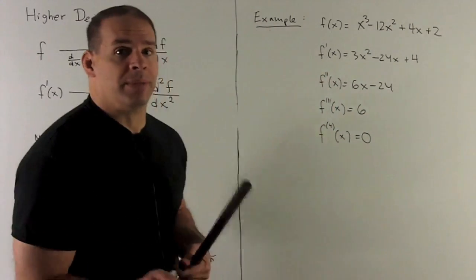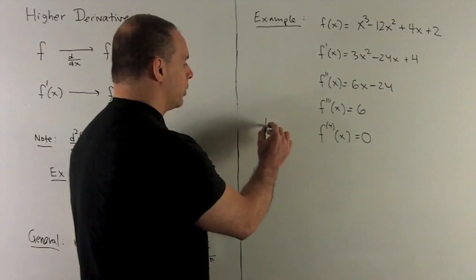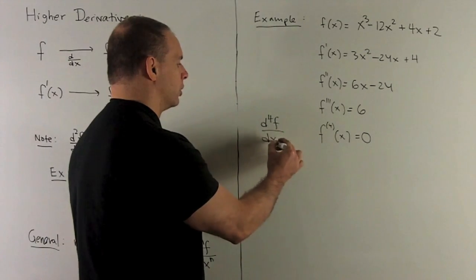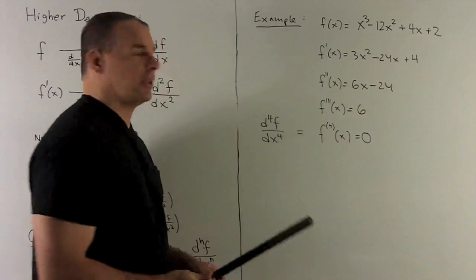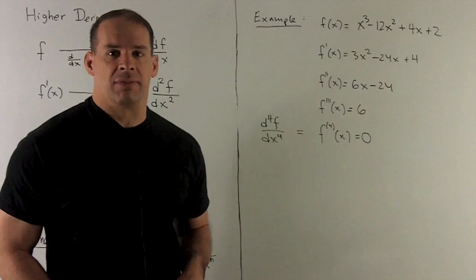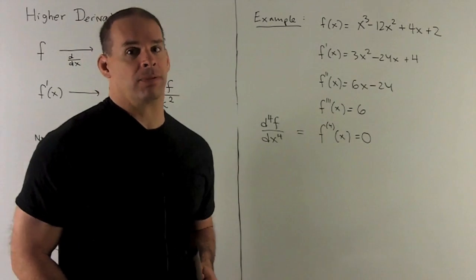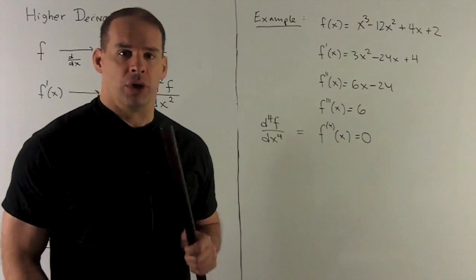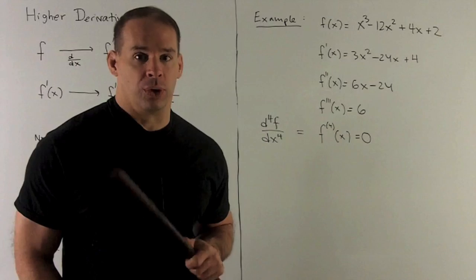Let's note, for the fourth derivative, we could write this in Leibniz notation, d raised to the 4 of f over dx to the 4. You'll encounter both of these when you read through calculus.